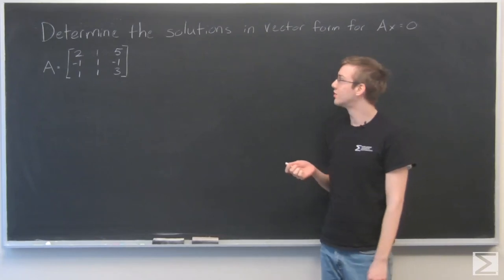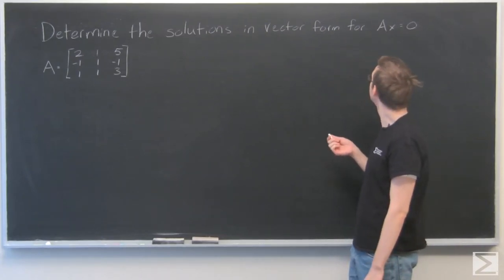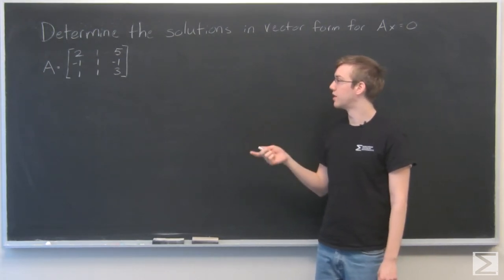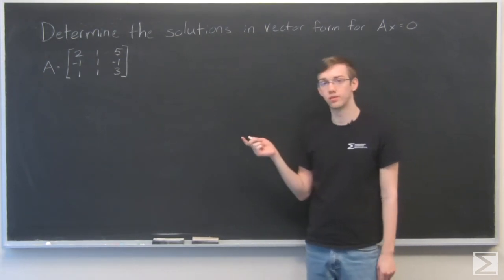OK, so for this problem, we need to determine all solutions in vector form for Ax equals 0, where A is this matrix: 2 and 5, minus 1, 1, minus 1, 1, 1, 3.